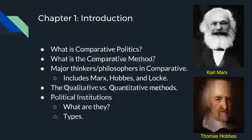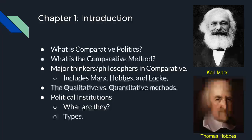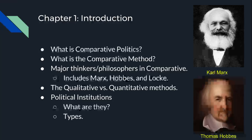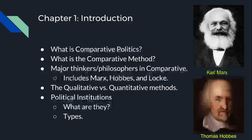Then we get into political institutions, which are basically organizations of activity that are valued for their own sake. We have two different types: formal and informal institutions. Formal institutions are based on officially sanctioned rules, like laws passed by the government. Informal institutions are unwritten or unofficial rules, like marrying at a young age in some different societies.